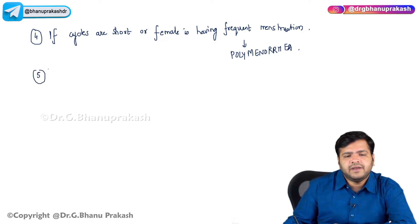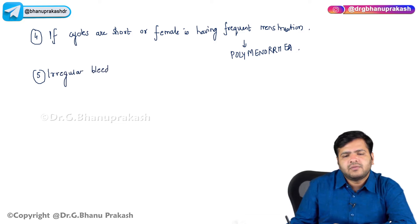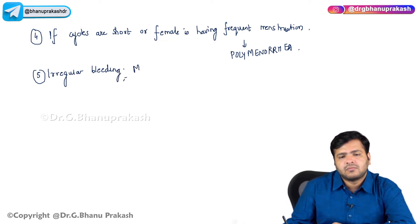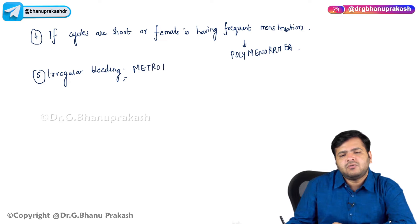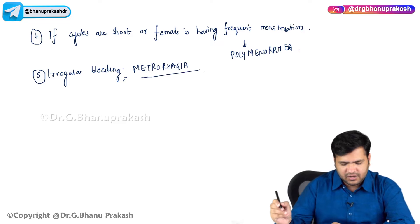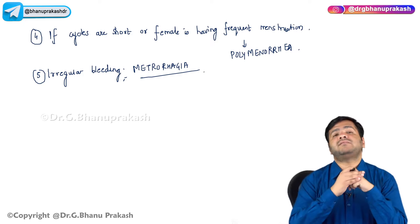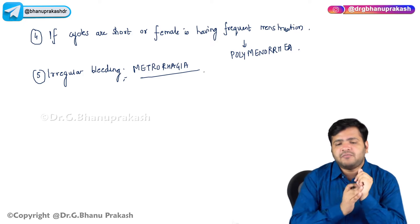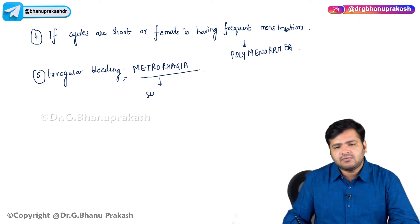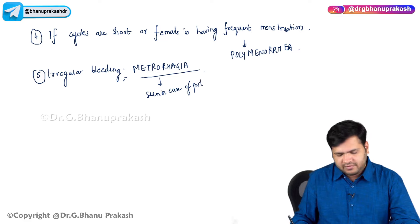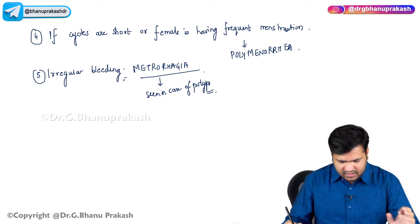If there is irregular bleeding, then it is called metrorrhagia. Metrorrhagia is seen in case of polyps.